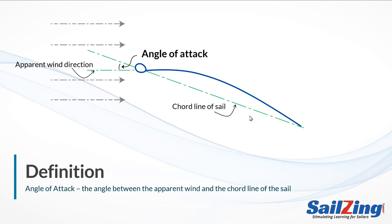This deflects more air downward and the plane climbs. In sailing, the angle of attack is the angle between the apparent wind direction and the cord line of the sail. The cord of a sail is the straight line between the luff and the leech. For more about how a wing or sail creates lift, see our website or the videos on our YouTube channel.